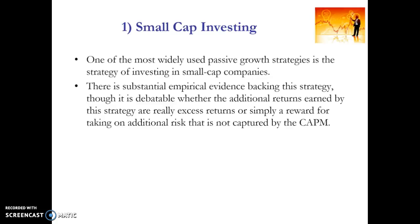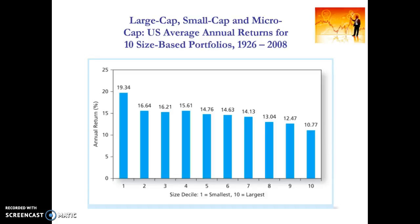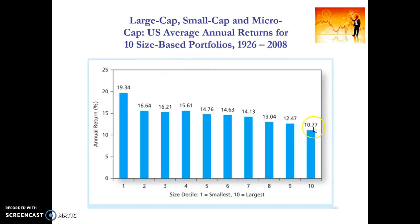There's a vast body of research that shows that over a long time period, small firms tend to earn a higher return compared with large firms. On the screen here we can see decile portfolios based on the market capitalisation of firms, rebalanced annually. The smallest decile of stocks across the period 1926 to 2008 earned an average annual return of 19.34%, whereas the average annual return decreases all the way down — the largest stocks earned an average annual return of 10.77%. This difference between the average returns of the small and largest stocks is what we call the small firm effect.